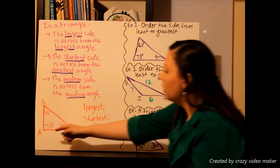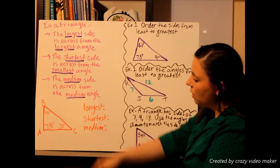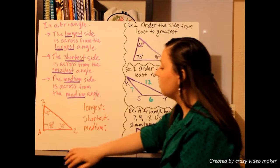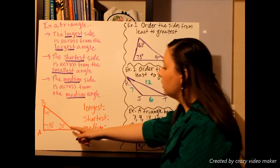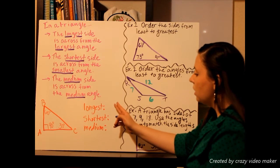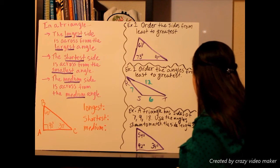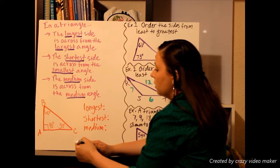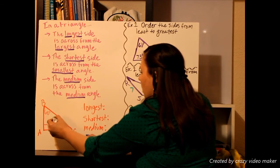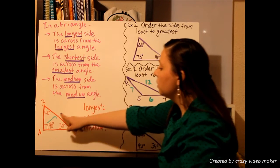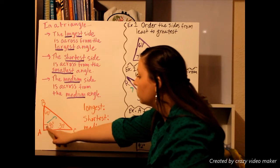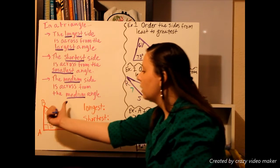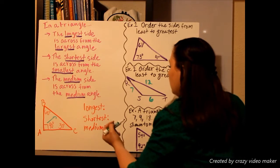For example, here we have triangle ABC with our three angles. Angle BAC is 90 degrees, angle ABC is 60 degrees, and angle BCA is 30 degrees. We want to find the longest, shortest, and medium side. We look at the 90-degree angle — it points directly across to the opposite side. The side across from this angle is side BC, which is our longest side. Find your largest angle, look directly across it, and that's your longest side.